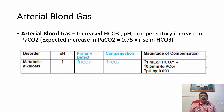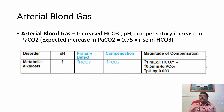On arterial blood gas (ABG), metabolic alkalosis shows elevated bicarbonate, elevated pH, and elevated PaCO2 as compensation. A useful rule: 1 mEq/L rise in bicarbonate corresponds to 0.7 mmHg rise in PaCO2, and pH increases by 0.003 per unit bicarbonate rise. For example, a patient presenting with high BP, low serum potassium, and high urinary potassium on ABG showing metabolic alkalosis should raise suspicion for Conn syndrome.